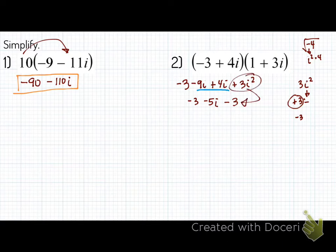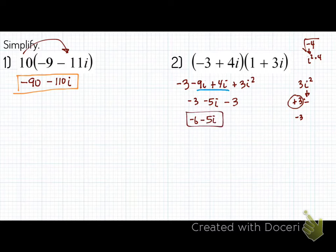Back to the problem. I'm going to combine like terms. We've got negative 3 minus 3 is negative 6, minus 5i. Box your answer and we are done — we have the real number right here and we have the imaginary number right here. Let's pause the video and write this down in our notes.